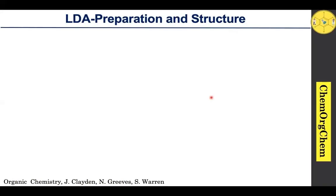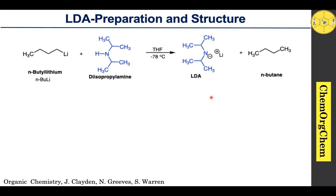First we are going to see LDA preparation and structure. The preparation of LDA is a simple and straightforward method. The reaction between n-butyl lithium and diisopropylamine under minus 78 degrees Celsius generates the corresponding lithium diisopropylamide with n-butane.